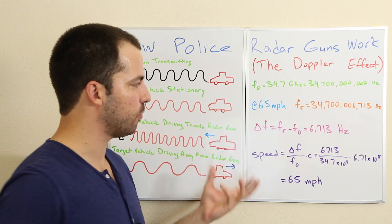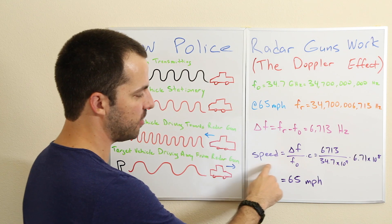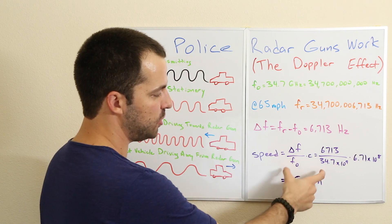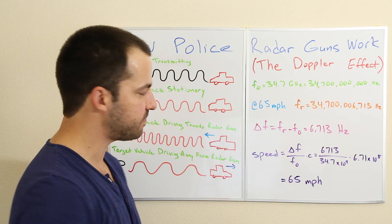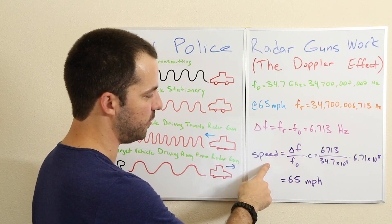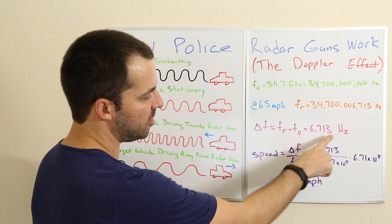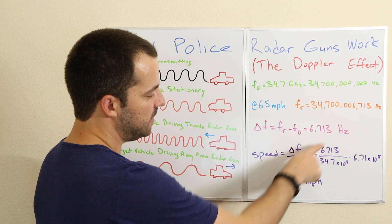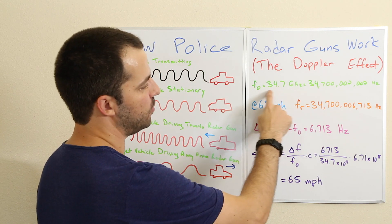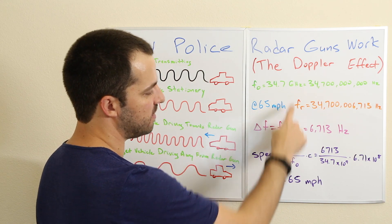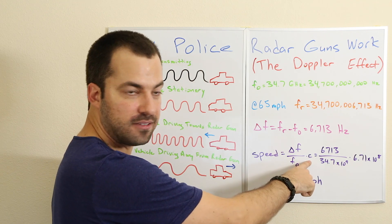Cool. So now the radar gun knows that. What it can do is calculate the speed — it just plugs everything into a really simple equation. The speed of the target vehicle is equal to the change in frequency divided by the original transmitted frequency, times the speed of light.